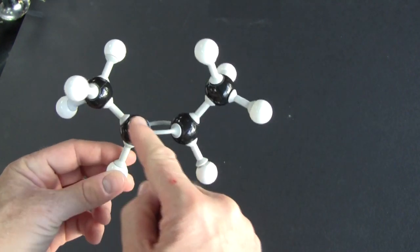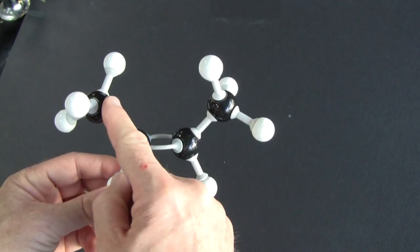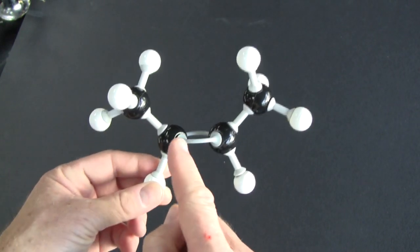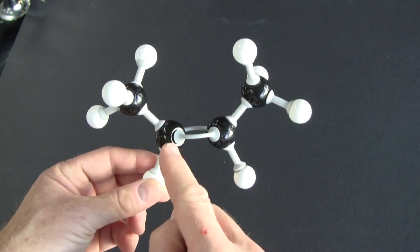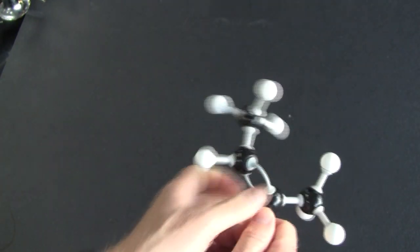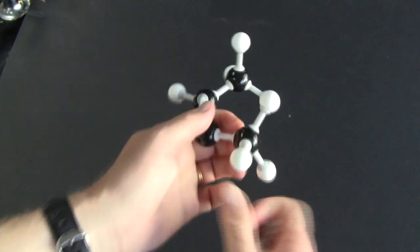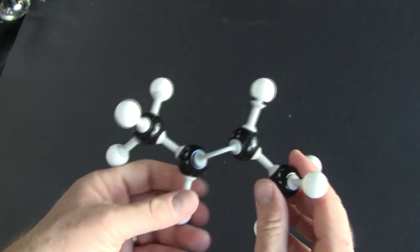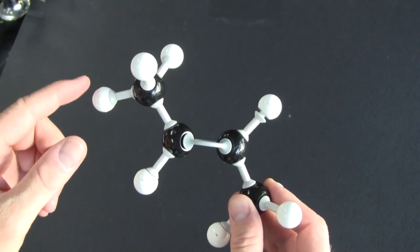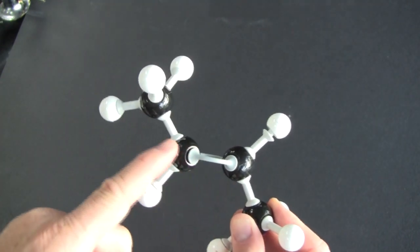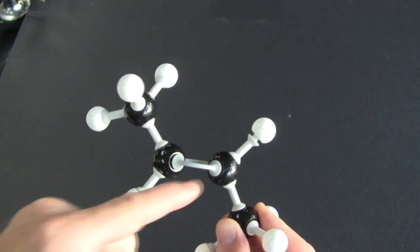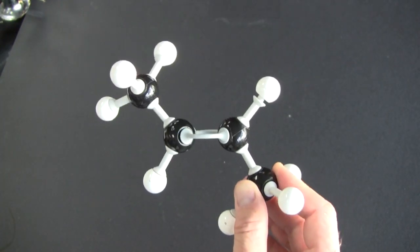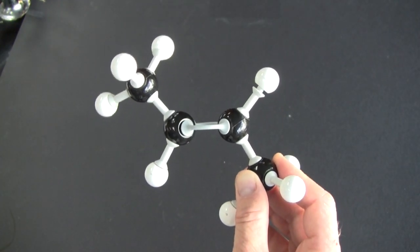So the name for this one where the same groups are on the same side is cis-but-2-ene. And this one where the same groups are on different carbons on different sides, hydrogens also, this is called trans-but-2-ene. Trans means across.